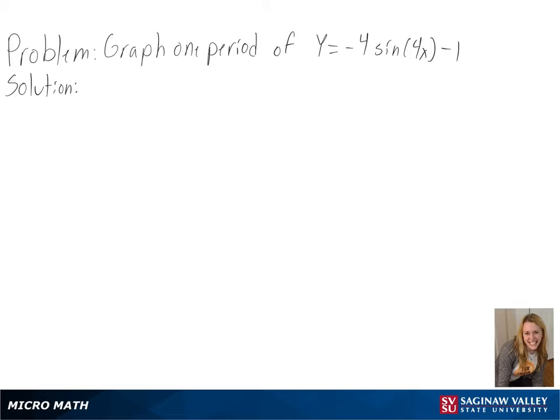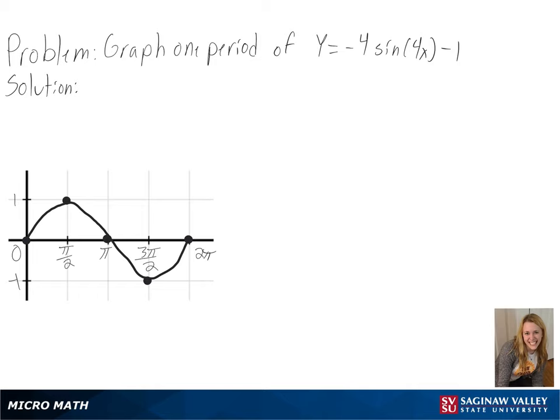Our problem is to graph one period of y equals negative 4 times sine of 4x minus 1. We can look at an original graph of y equals sine x to see how ours will be changing.